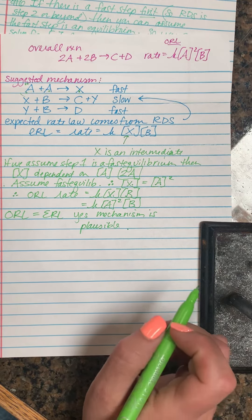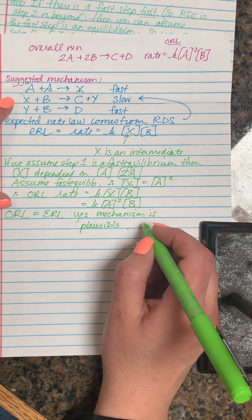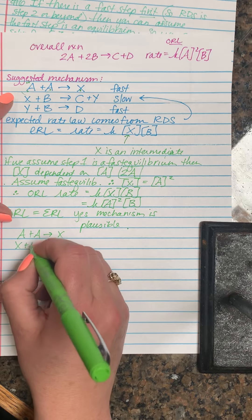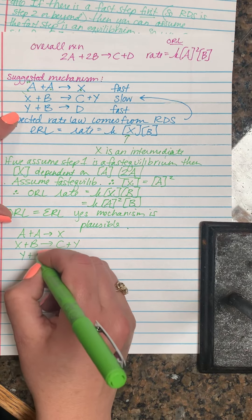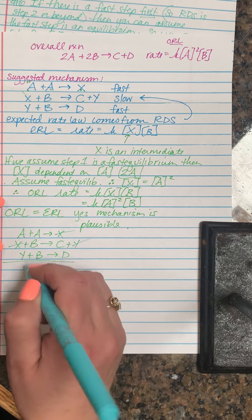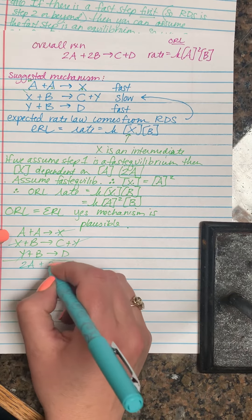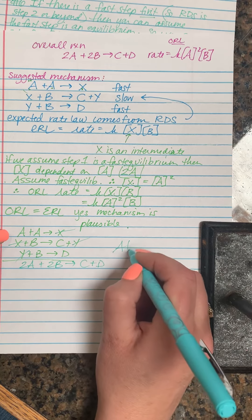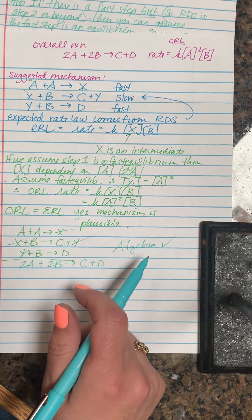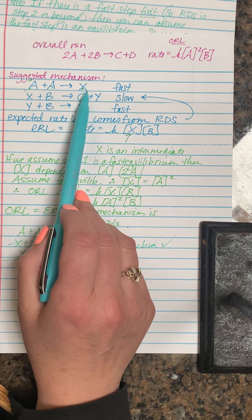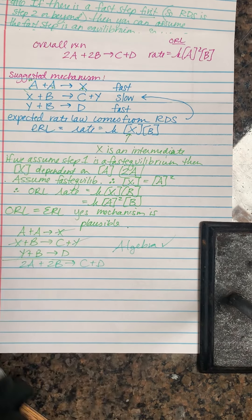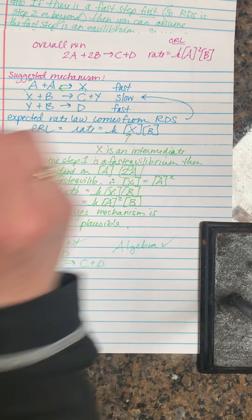We also check the algebra to make sure the mechanism gives the correct overall reaction. Adding the steps: A + A → X; X + B → C + Y; Y + B → D. Canceling intermediates: X cancels, Y cancels, and we're left with 2A + 2B → C + D. The algebra checks out. Assuming a fast equilibrium lets us confirm the rate laws match, and we're good to go.